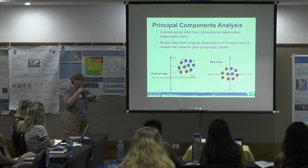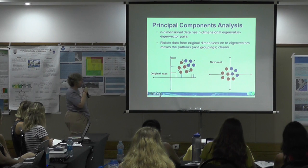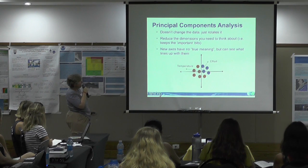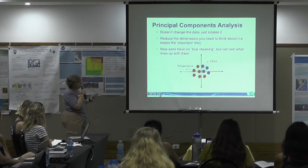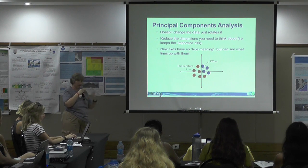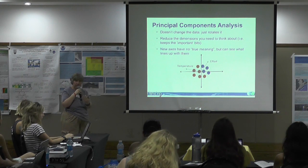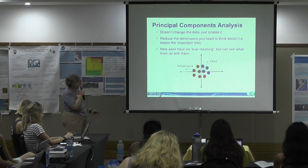That's the value of PCA, particularly in really high-dimensional space where humans don't easily think — it can turn things around so you can see the patterns more clearly. On top of that, you can then put in covariance or potential drivers in the system, to see what might be driving those patterns and what might be the determining factor leading to them.